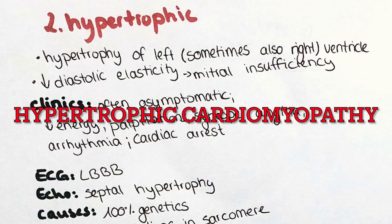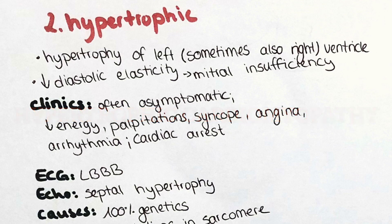The next type of cardiomyopathy is the hypertrophic type. It presents with hypertrophy of the left ventricle, sometimes also of the right ventricle additionally. This leads to decreased elasticity of the ventricle in diastole, inhibiting proper filling of the ventricle. Due to the increased pressure and volume overload on the left ventricle, mitral insufficiency develops over time. Patients often do not experience symptoms, but if they do, they are often severe.